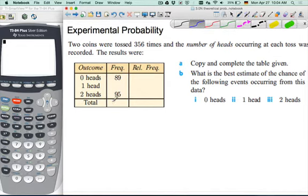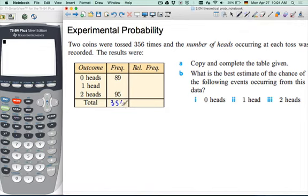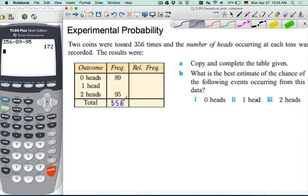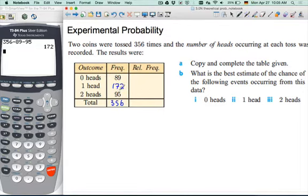So we can write 356 at the bottom there, and the frequency column should add up to 356. So we can work backwards: 356 minus 89 minus 95. That is 172. Now, given the context of this problem, does that number make sense based on what we know about coins?